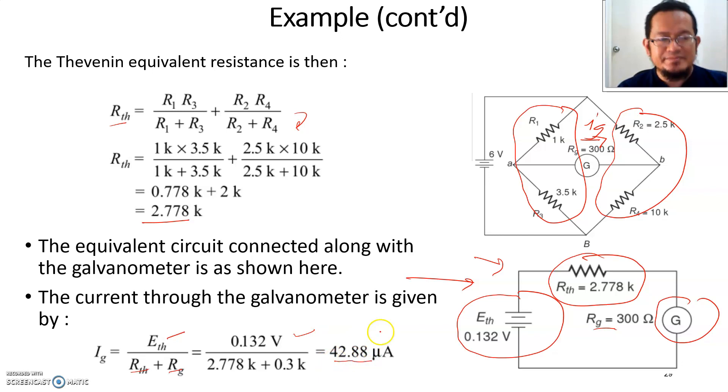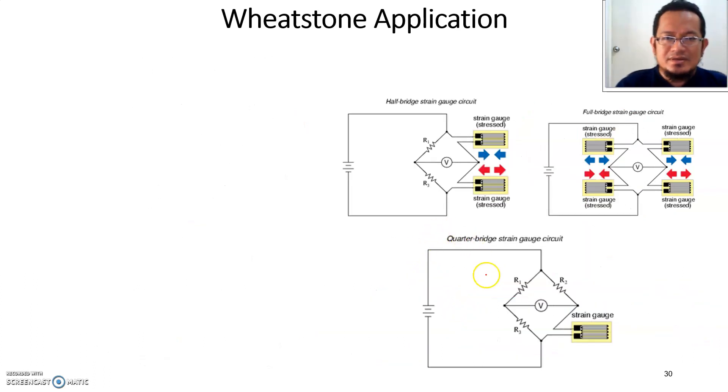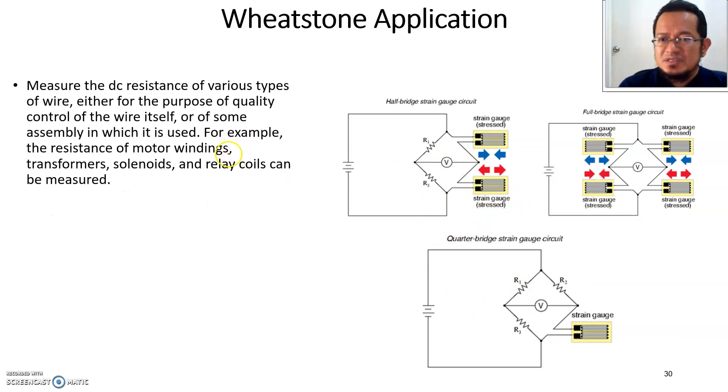It's around 42.8 microamps, a very small current. Let's talk lastly about Wheatstone bridge applications. In real practical applications, the Wheatstone bridge is used to measure the DC resistance of various types of wires.